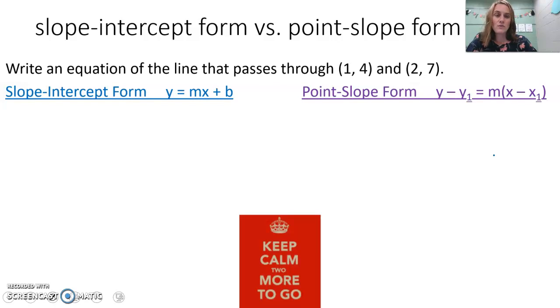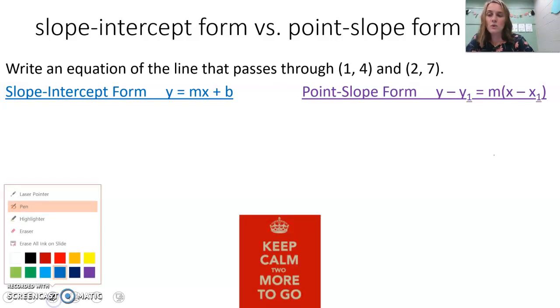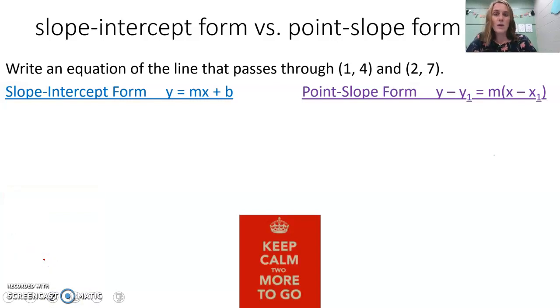For either of those forms, you need to find the slope. No matter what, we have to find the slope because y = mx + b has an m, and point-slope form has an m. They both have it.